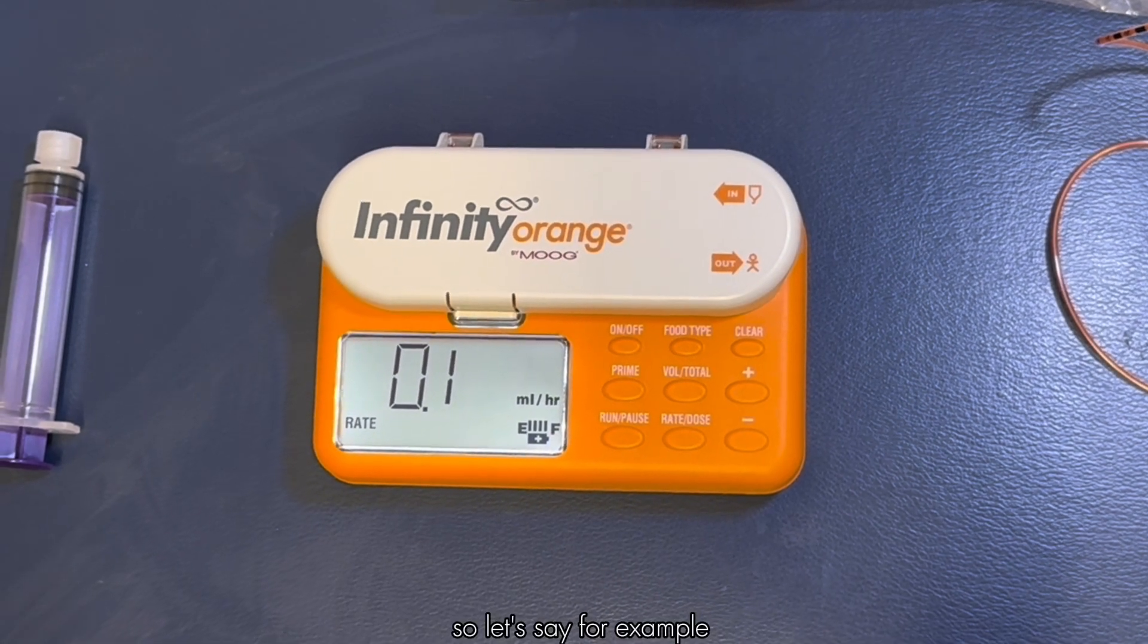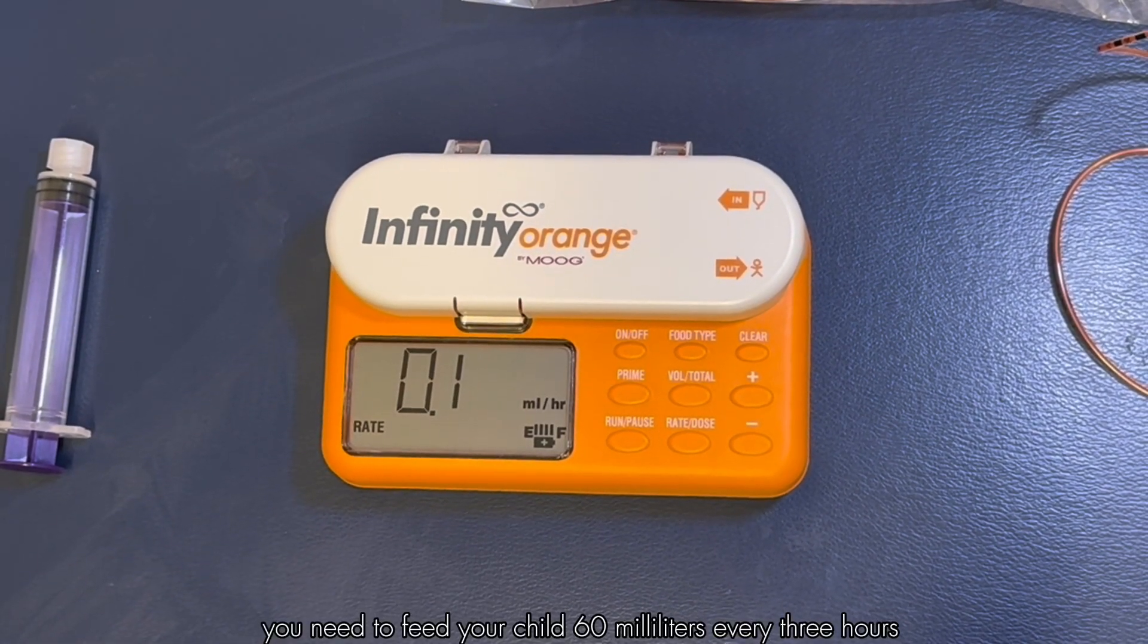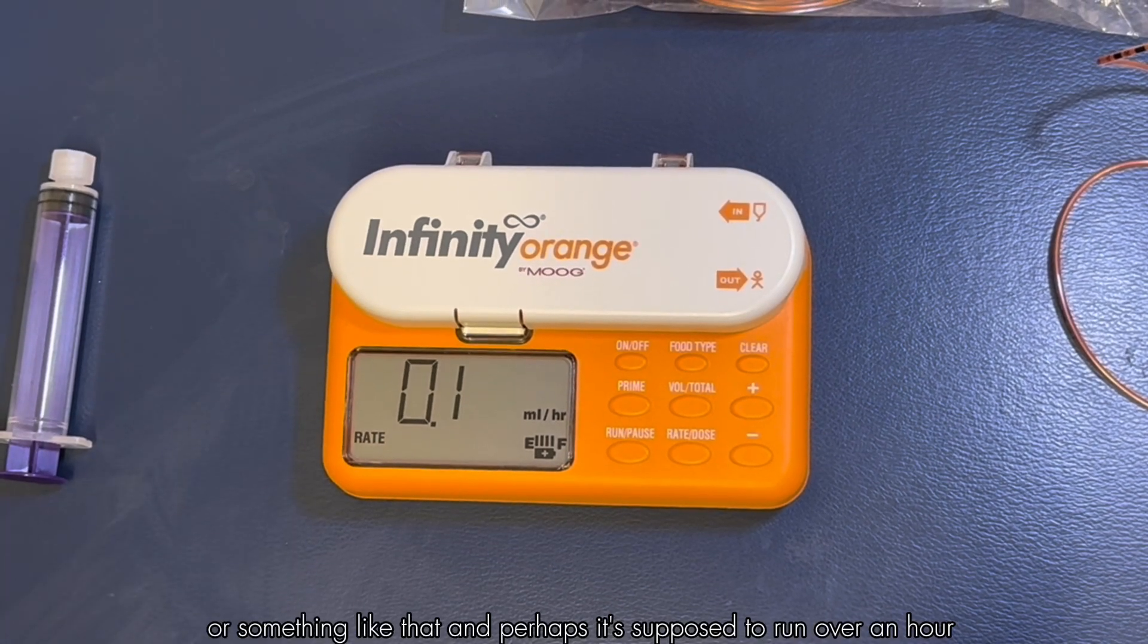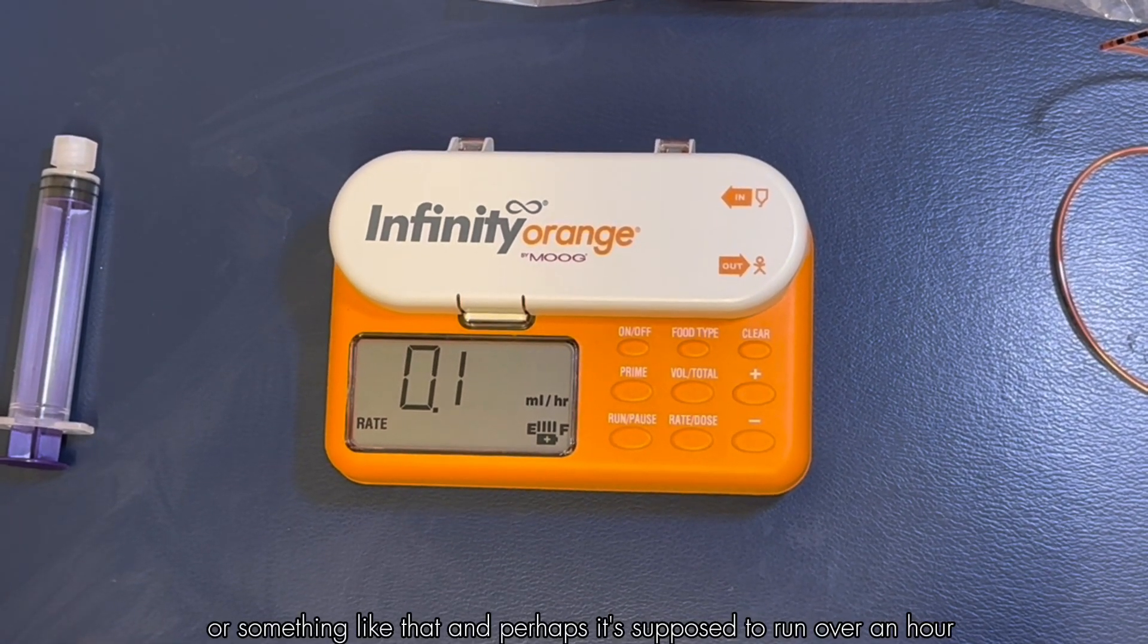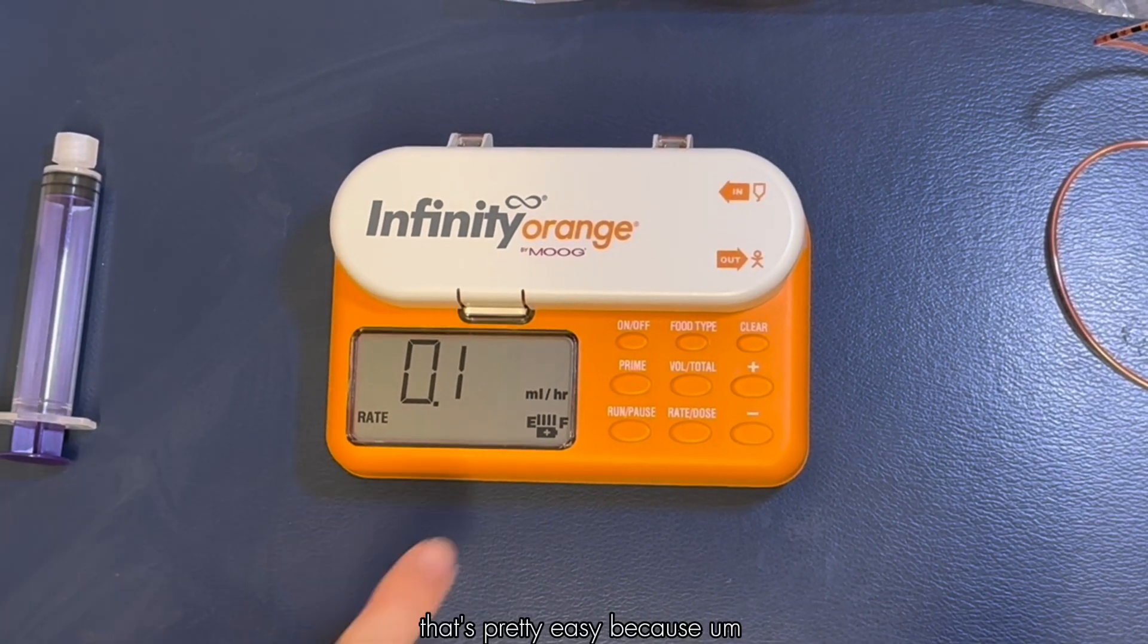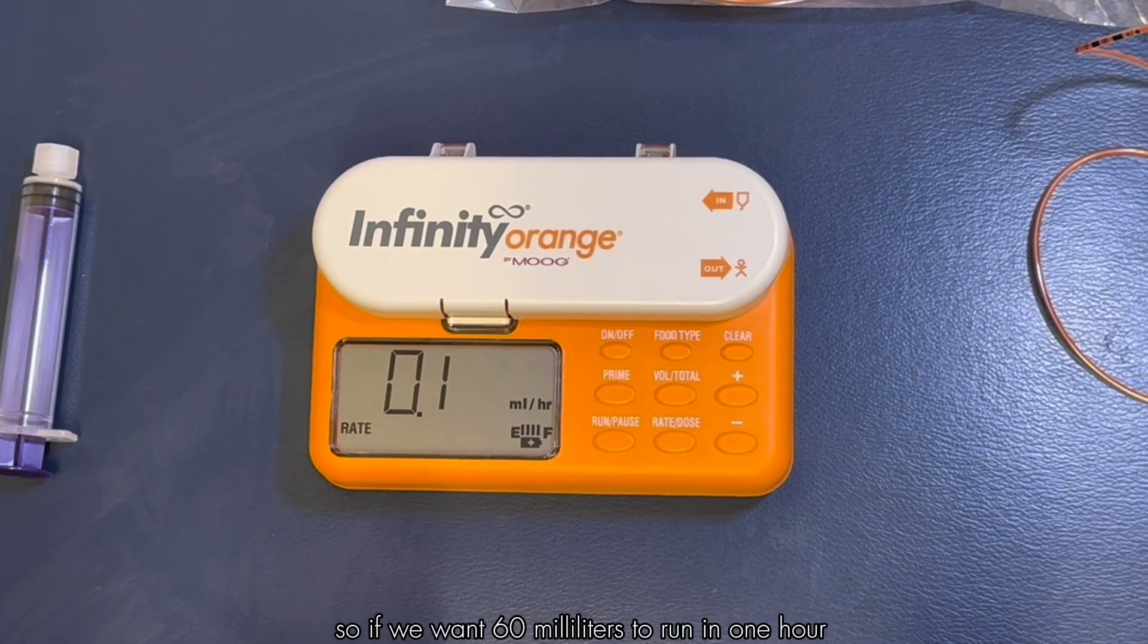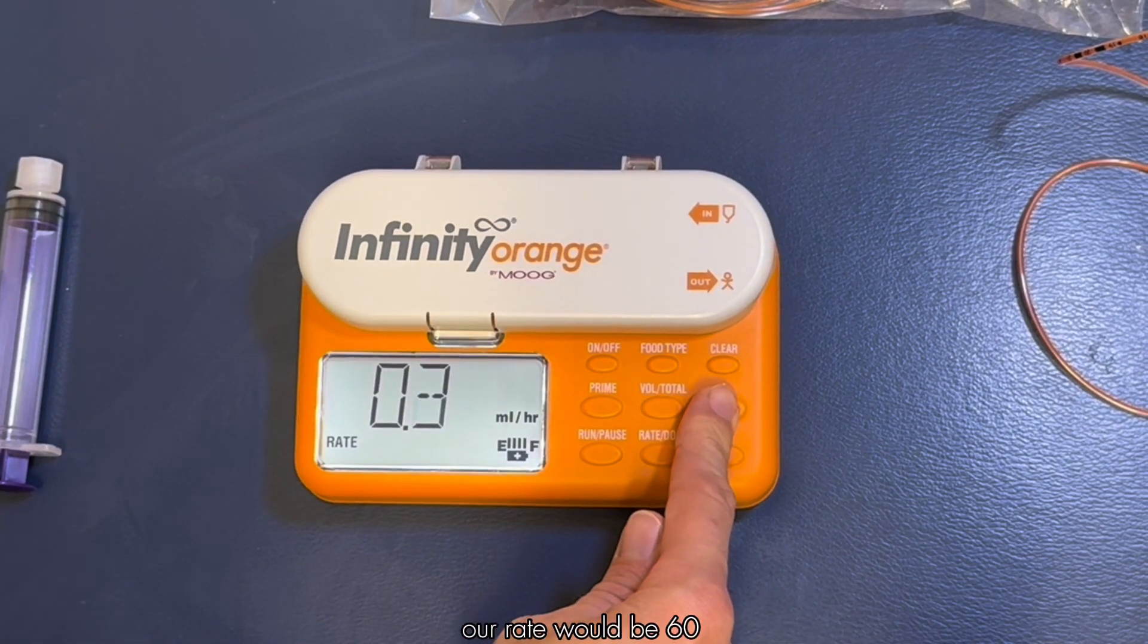Let's say for example you need to feed your child 60 milliliters every three hours and perhaps it's supposed to run over an hour. That's pretty easy because the rate is in milliliters per hour, so if we want 60 milliliters to run in one hour our rate would be 60.